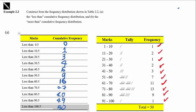And you now have a complete table of the less than cumulative frequency distribution. Please note that this less than cumulative frequency distribution always starts from 0 and ends at the total count, which is 50 in this case.